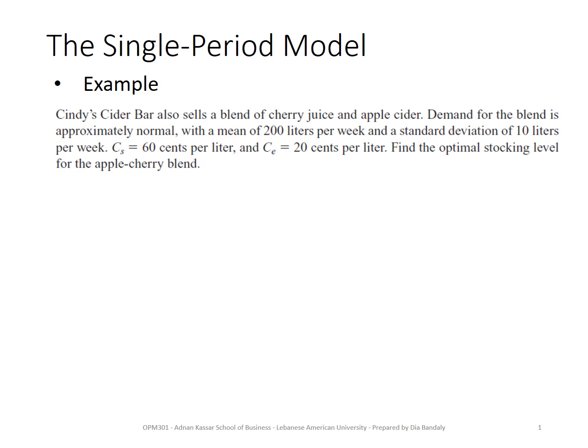Let's do this example that illustrates the case when demand is normally distributed. We have a store that sells juice, and past data for demand shows that it follows a normal distribution with a mean of 200 and standard deviation of 10. To apply the single-period model, it's very important that you have past data and can represent the uncertainty in demand using a certain probability distribution.